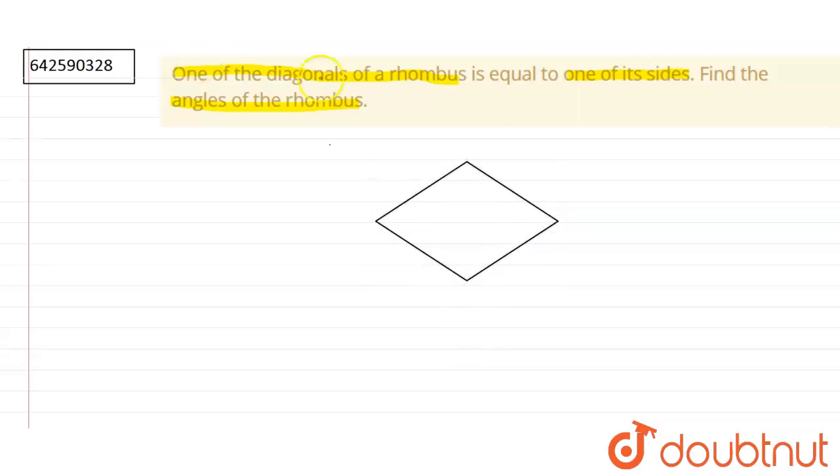In this, it is given that one of its diagonals, for example this diagonal, is equal to its side. So this line and this line are equal. When we draw the other diagonal